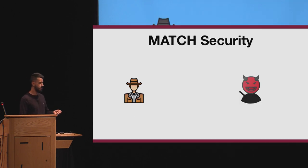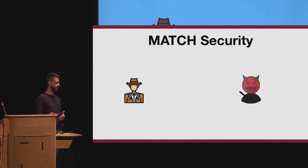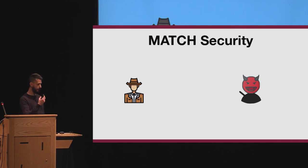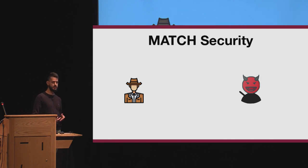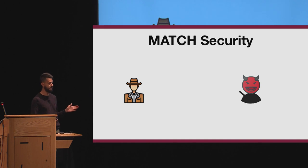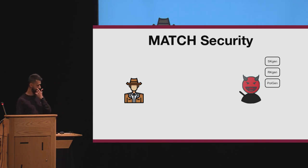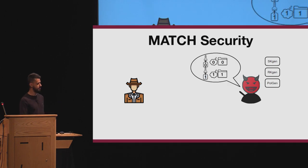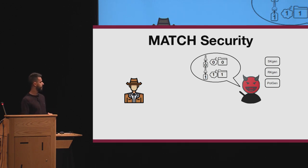Matchmaking encryption is a non-interactive secret handshake, so it must guarantee the same properties. For this reason, we define two game-based definitions to capture these properties. The first is called match security, which incorporates at the same time the CPA security of the encryption scheme together with detector resistance. The attacker is the receiver, has Oracle access to the key generation algorithms, and during the game produces two challenges, where each challenge contains the input of the encryption algorithm: the attributes, the policy, and the message of the sender.